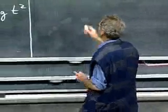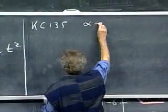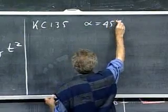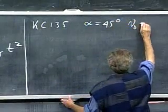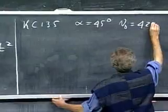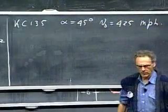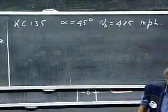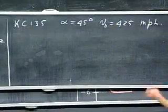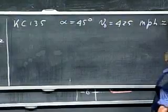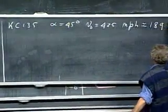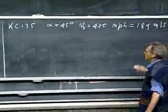In the case of the KC-135, we'll take an angle for alpha of 45 degrees, and we'll take V0, which was about 425 miles per hour. You may remember that from that lecture. 425 miles per hour translates into about 189 meters per second.